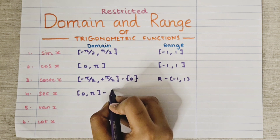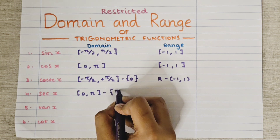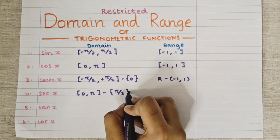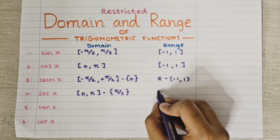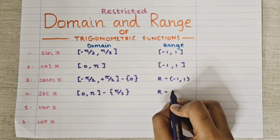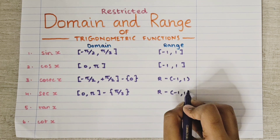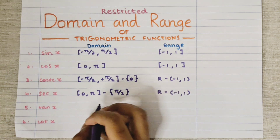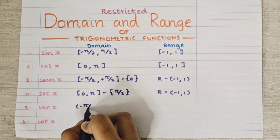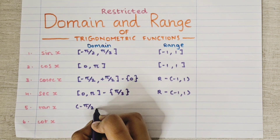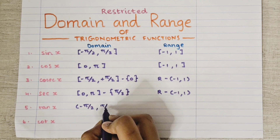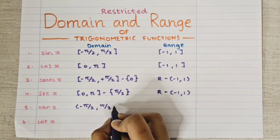For the secant x function, the domain is the closed interval [0, π] minus {π/2}, and the range of secant x is the real numbers minus the open interval (-1, 1).